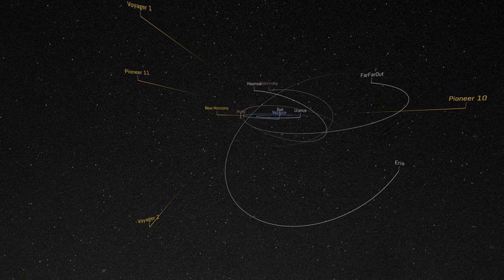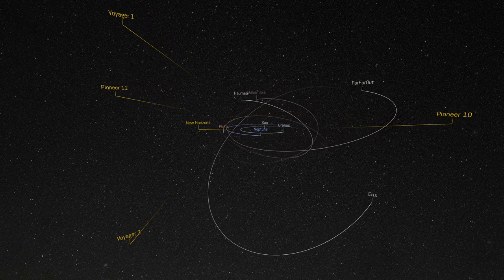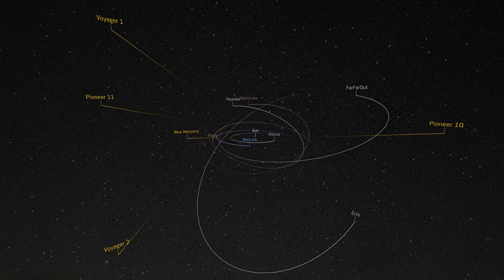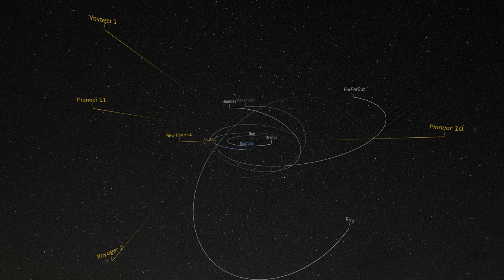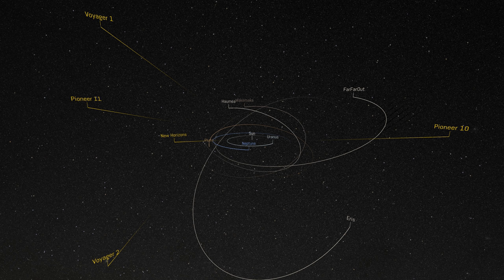The solar system extends beyond the well-known planets into a reservoir of small, frozen bodies named the Kuiper Belt. This reservoir is also host to larger bodies. Pluto and Eris are two dwarf planets that you can see here by their orbits. The farthest known dwarf planet is called Far Far Out.